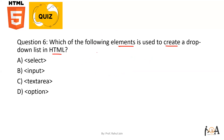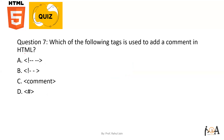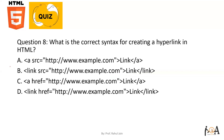Question number six: which element is used to create a drop-down list in HTML? To create a drop-down list, we use the select tag. Question number seven: which tag is used to add a comment in HTML? To add comments in HTML, you use the exclamation mark syntax — like this — so option A is the correct answer.